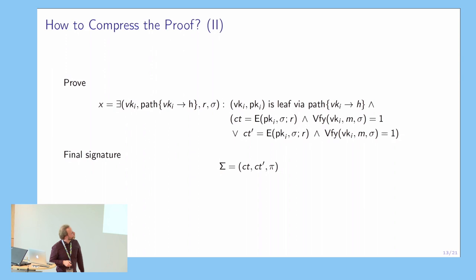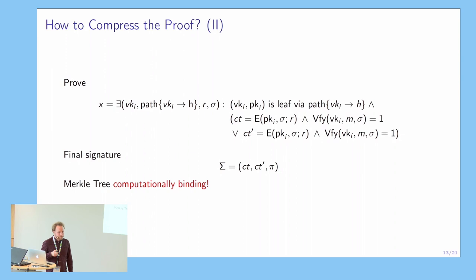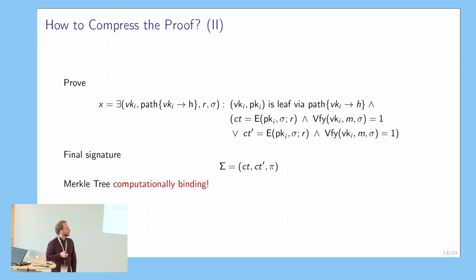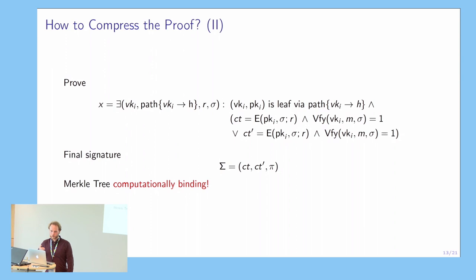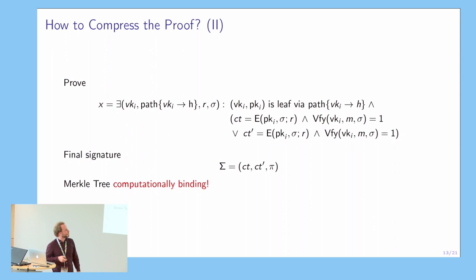Now we have a logarithmic statement because of the membership proof, and the ciphertexts are independent of the ring size, so it seems we are done. Unfortunately not, because the unforgeability proof crucially relied on the fact that the proof was perfectly sound. The Merkle tree, however, is only computationally sound, and especially if we want to avoid trusted setup we would have to allow the signer to choose the hashing key. In this way the signer could easily choose a bad hashing key that allows them to prove something about a key that is not actually in the ring. So this approach does not work if we want to avoid trusted setup.